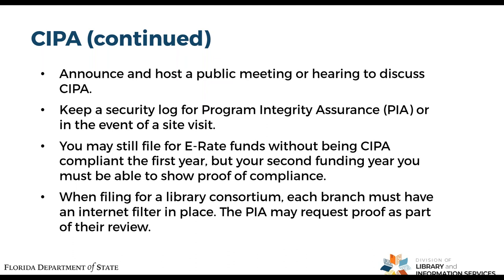Additionally, if you have a filter in place you must keep a security log at every branch where that filter is in place — especially for those in larger consortiums or cooperatives, it can't just be at the main branch. Keep a log; some filters provide a monthly report — keep that in case of a Program Integrity Assurance site visit. If this is your first year ever filing for E-Rate funds, you don't have to be CIPA compliant immediately, but your second funding year you must show compliance. This applies even if you filed for E-Rate 15 or 25 years ago.